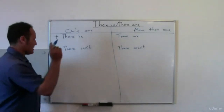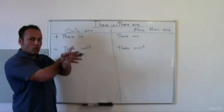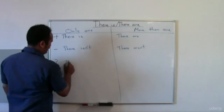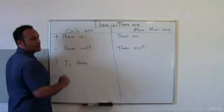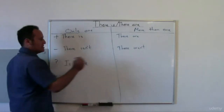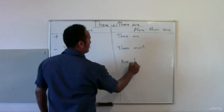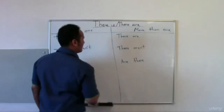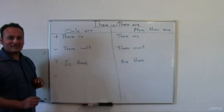For questions: take 'there is' and swap it round — it becomes 'is there'. And 'there are' becomes 'are there'. That's how we form questions.